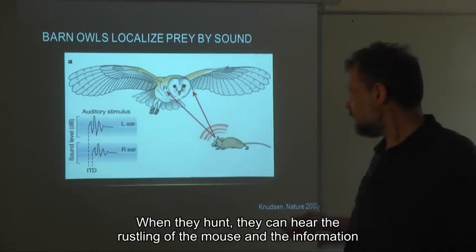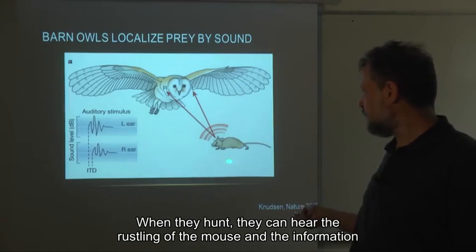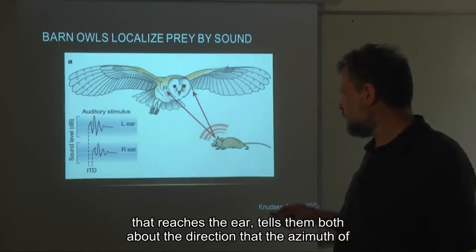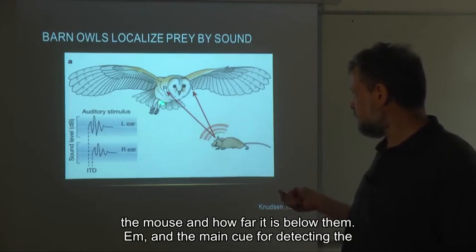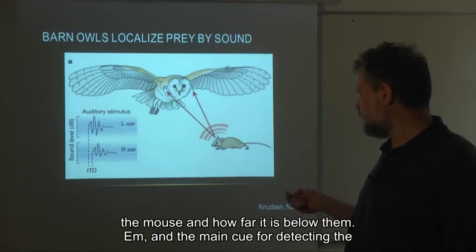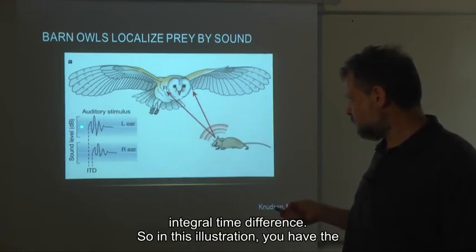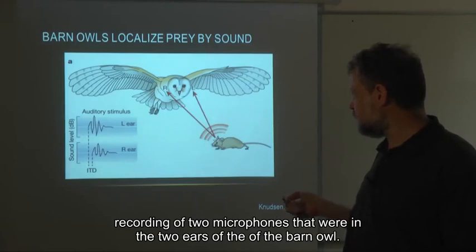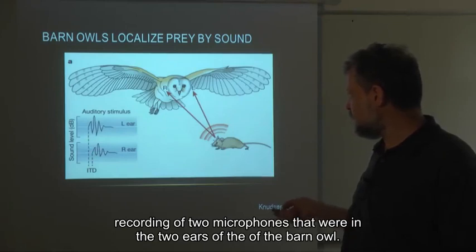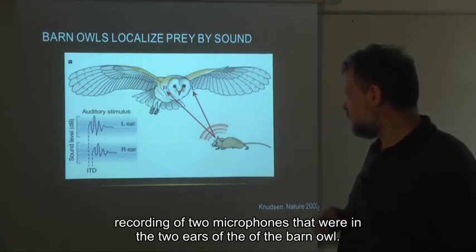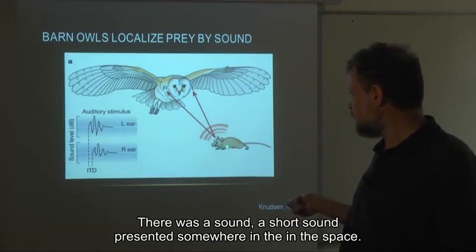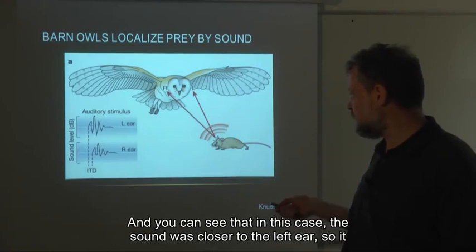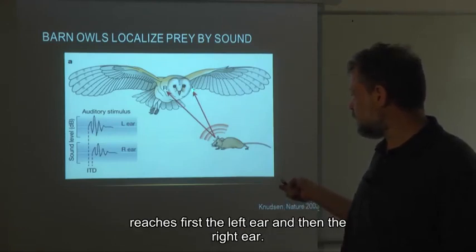When they hunt, they can hear the rustling of the mouse. And the information that reaches their ear tells them both about the azimuth of the mouse and how far it is below them. The main cue for detecting the azimuth of the sound source for a barn owl is, like in mammals, the inter-aural time difference. In this illustration, you have the recording of two microphones that were in the two ears of a barn owl. There was a short sound presented somewhere in space, and you can see that in this case the sound was closer to the left ear.